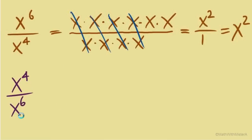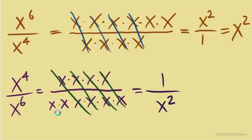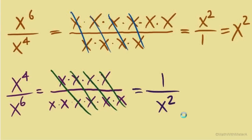Now let's pay attention to numerator and denominator, because it's very different if we have x to the fourth over x to the sixth. In expanded form we still see canceling, but the leftovers are now in the denominator. That's critical — they must stay in the denominator. An answer of x squared would be incorrect for this problem.